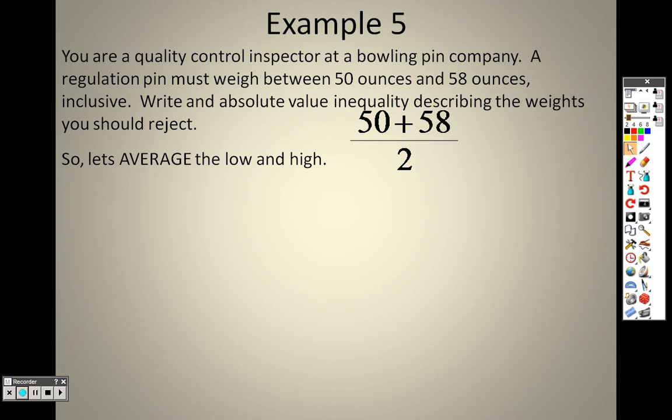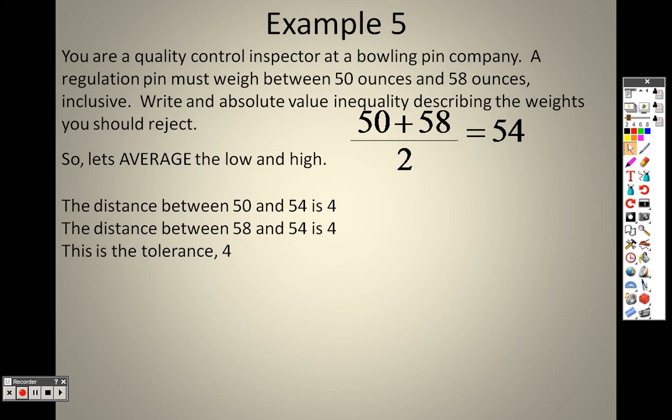I'm going to try to find the average, so I take the low pin, which is 50, and I take the high pin, which is 58. I add them together, divide by 2, and find out the middle is 54. So the distance between each one is 4, right? Between 50 and 54 is 4. Between 58 and 54 is 4. So this is the tolerance. The tolerance is 4, is basically the point that I'm getting at here.